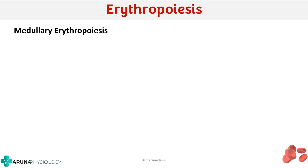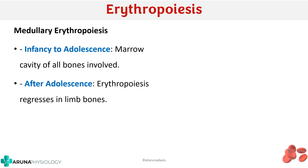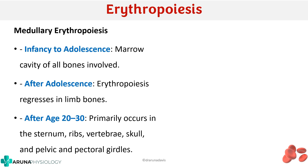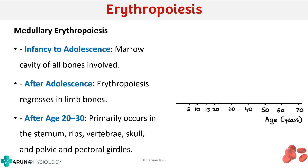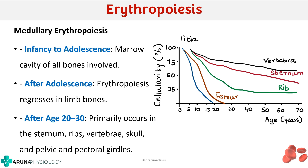Which bones are involved in medullary erythropoiesis? Initially, in infancy up to adolescence, the marrow cavity of all bones is involved, including the limb bones. But after adolescence, erythropoiesis in the limb bones decreases. After around age 20 to 30, erythropoiesis primarily occurs in bones like the sternum, ribs, vertebrae, skull, and pelvic and pectoral girdle — mainly the flat bones. This can be depicted in a graph with age in years on the x-axis and cellularity percentage on the y-axis.